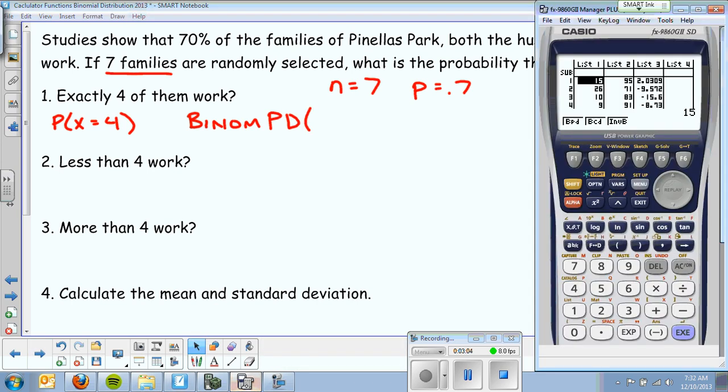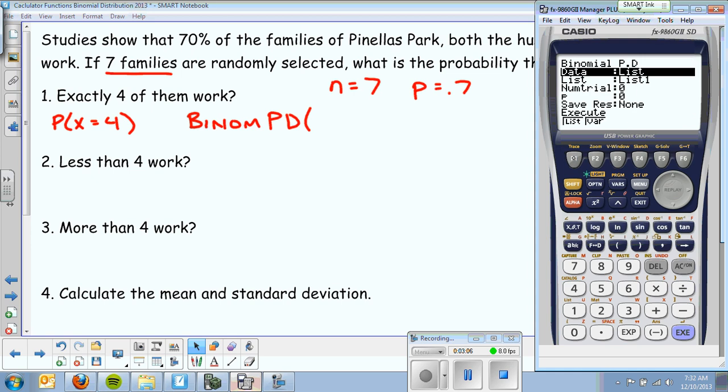Now the Casio has a nice little built-in menu. So binomial PD, the first thing it says is data. I want my list, I want that to be variable. So always make sure that it says variable. So X, in this case, is 4. Number of trials is 7. P is 0.7.